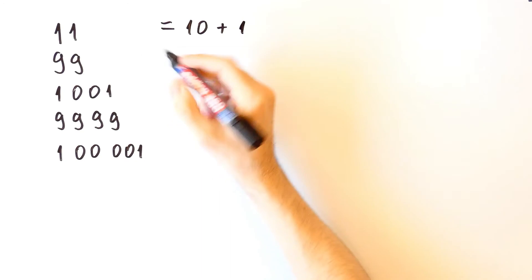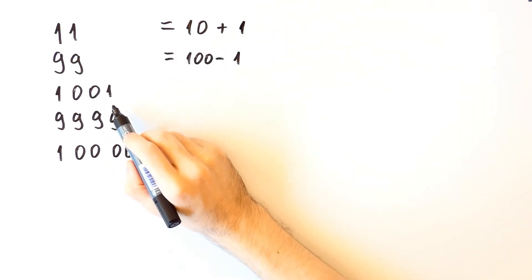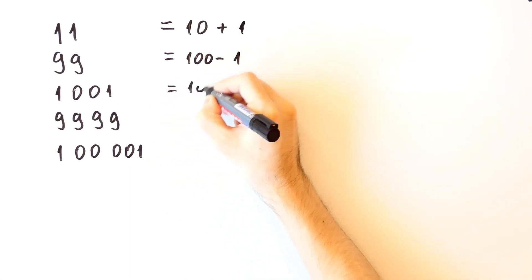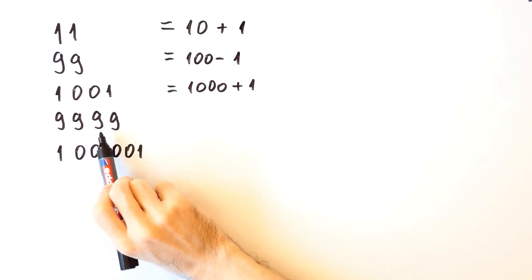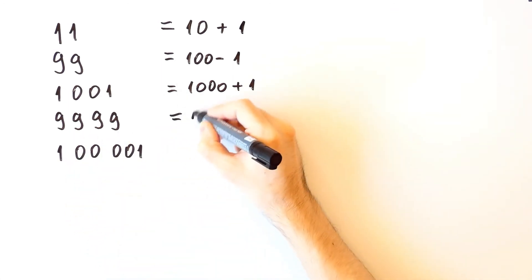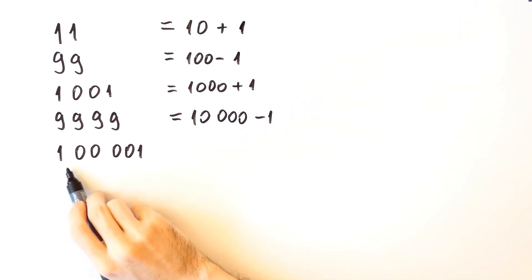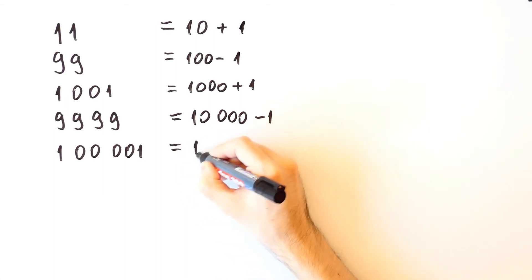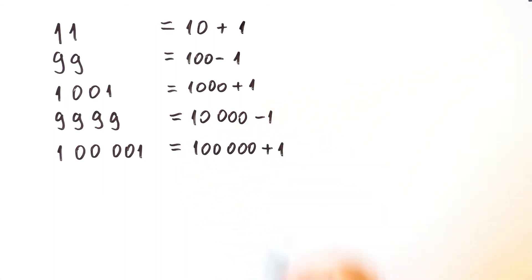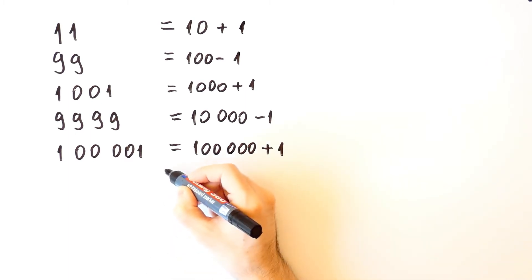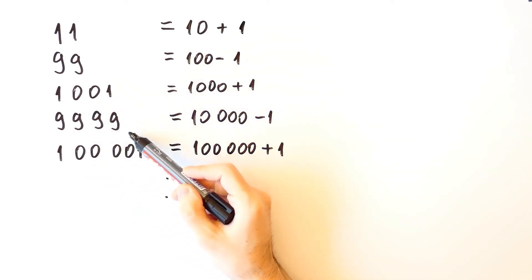We note that 11 is equal to 10 plus 1, and 99 is equal to 100 minus 1. We could continue like this and we'll get that all those numbers are divisible by 11.